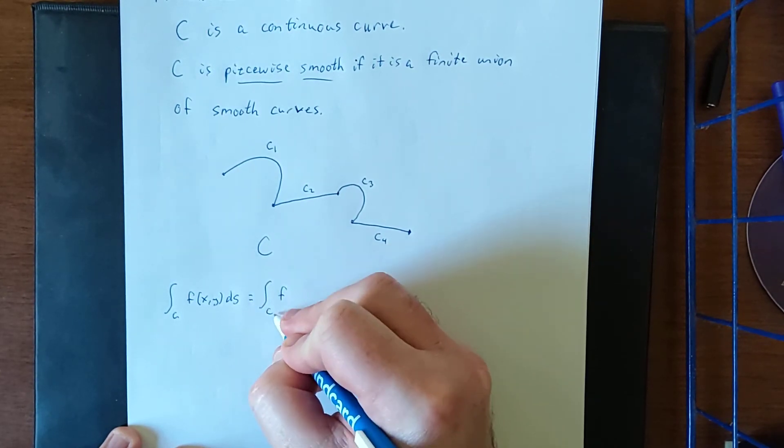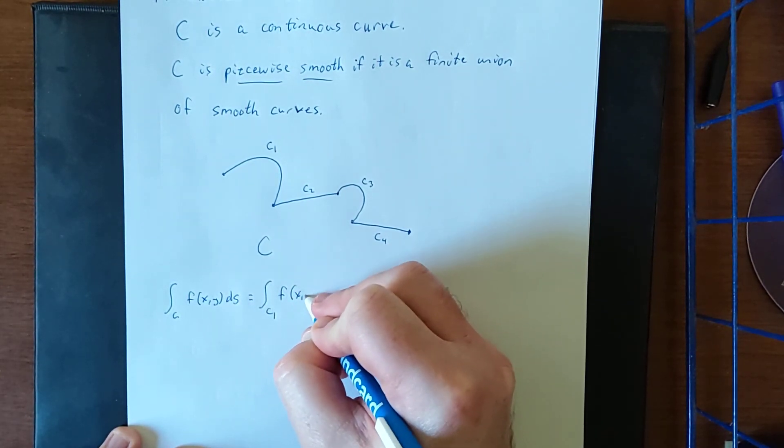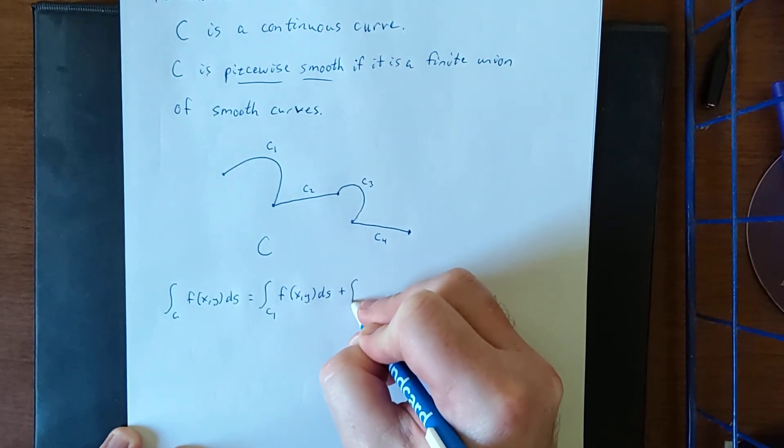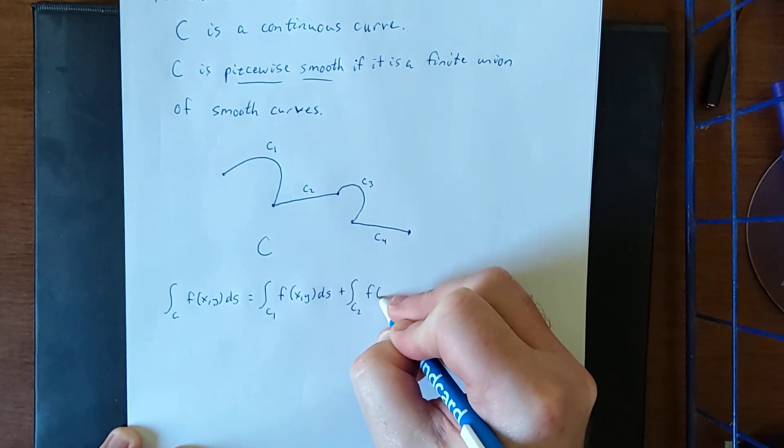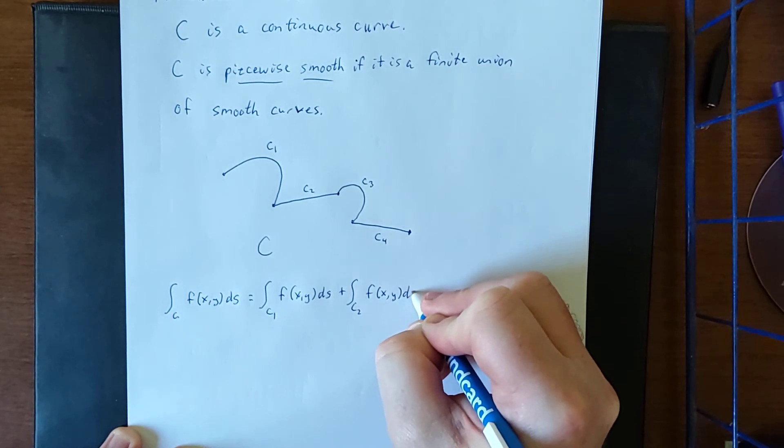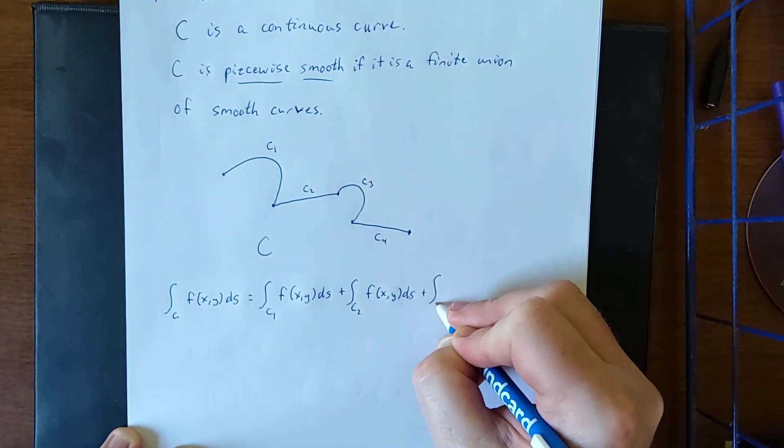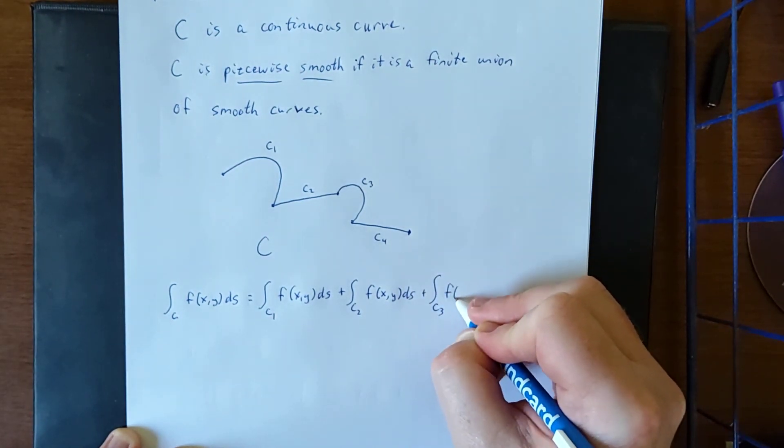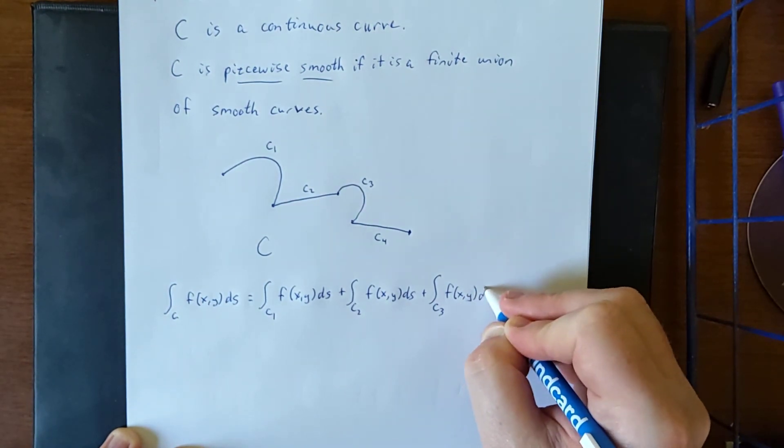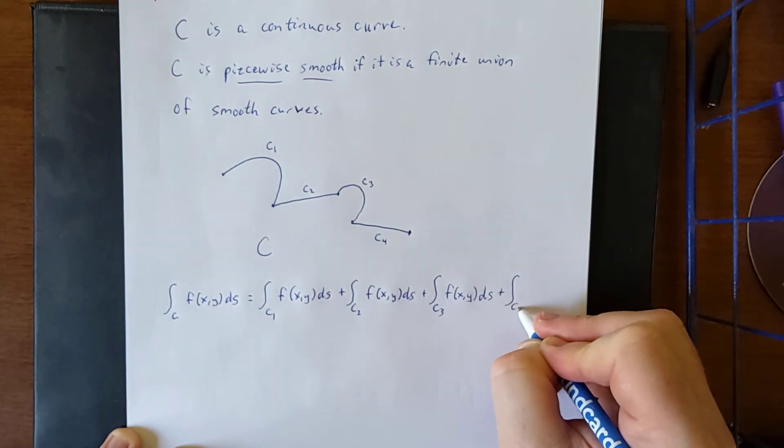Once I evaluate all of those, so C1 plus line integral over C2 plus the line integral over C3 plus the line integral over C4.